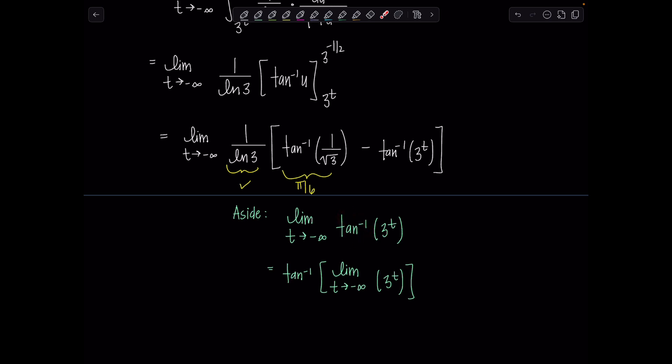Okay, so here we have t approaching negative infinity. Where is 3 to the t going? Well, if the exponent's getting very, very large in the negative direction, then this whole quantity is approaching zero. Hopefully that's clear. If you think about your exponential functions, right? 3 to the t exponential functions with base bigger than one.